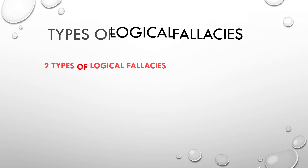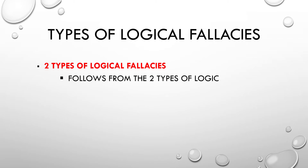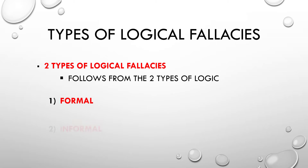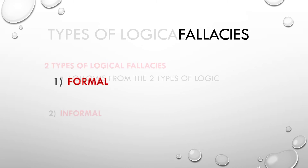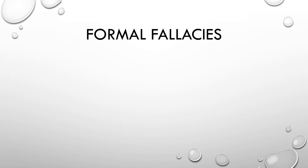When we talk about the types of logical fallacies, broadly speaking there are two types, following from the two types of logic we just looked at. You have formal logical fallacies, following from formal logic, and informal logical fallacies, following from informal logic — which makes sense. Let's start with the formal fallacies.